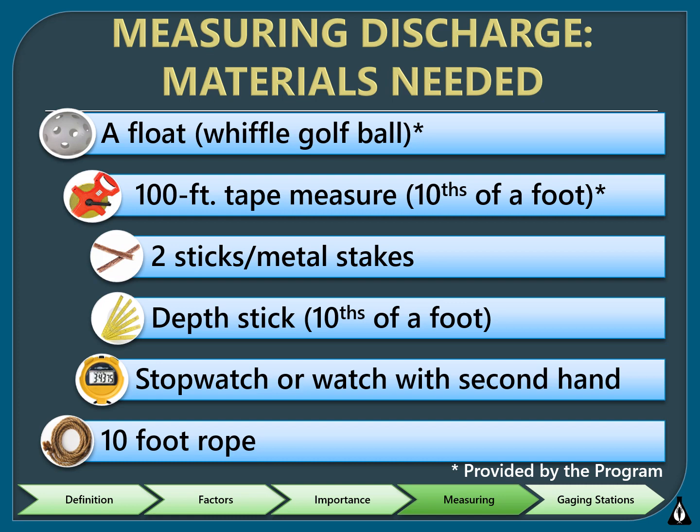The Stream Team program measures stream discharge with the float ball method. The equipment is simple and some is provided by the program. When you receive monitoring equipment, you will receive the float balls and a 100-foot measure tape. The only item you'll have to provide yourself is a depth measuring stick, which can be made from a dowel rod or small PVC pipe. Stretch the measure tape across the stick and make marks at each tenth of a foot. This same stick could be used as a handle for the kick net used in biological monitoring. Metal stakes and rope are optional but may make measurements a little easier.